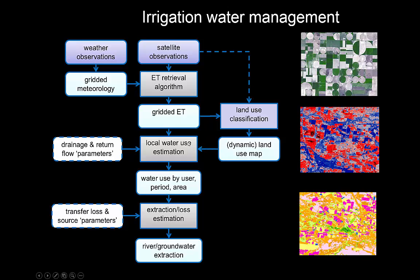Using a dynamic land use map — also likely from remote sensing — we can estimate local water use. Accounting for other terms such as drainage and return flows, we can estimate water use by user, period, and area. Looking at transfer losses in the irrigation supply channel, we can ultimately back out the amount of river or groundwater that went into the irrigation area.